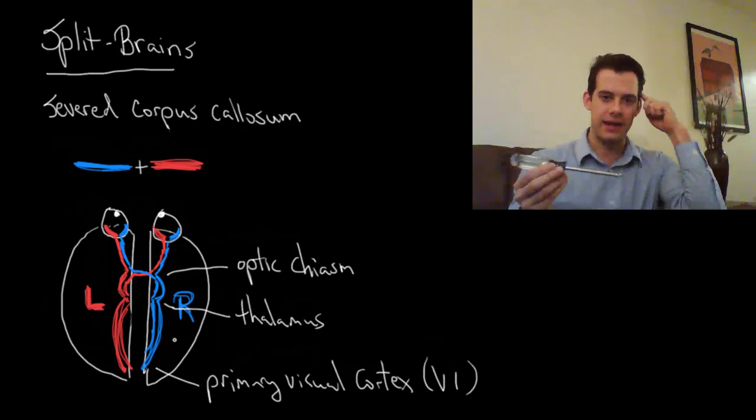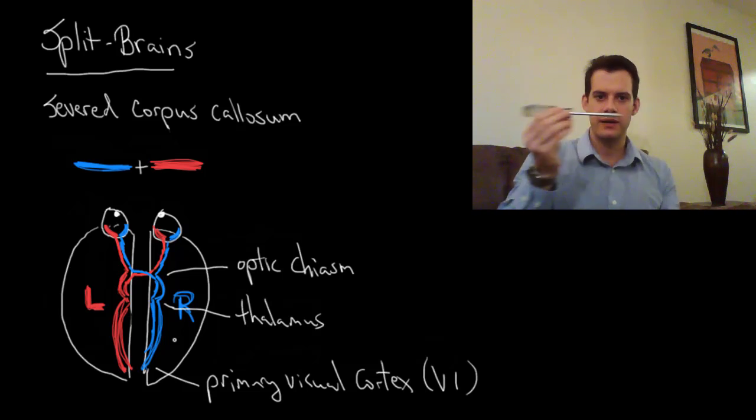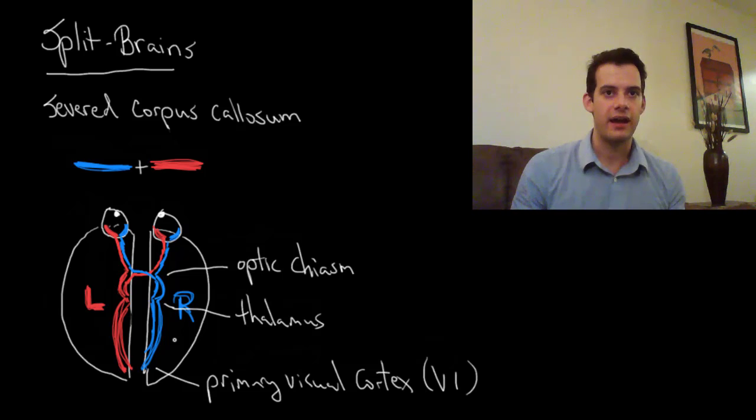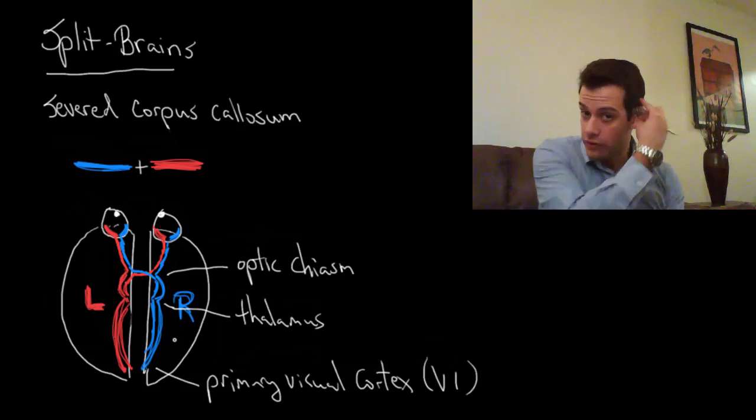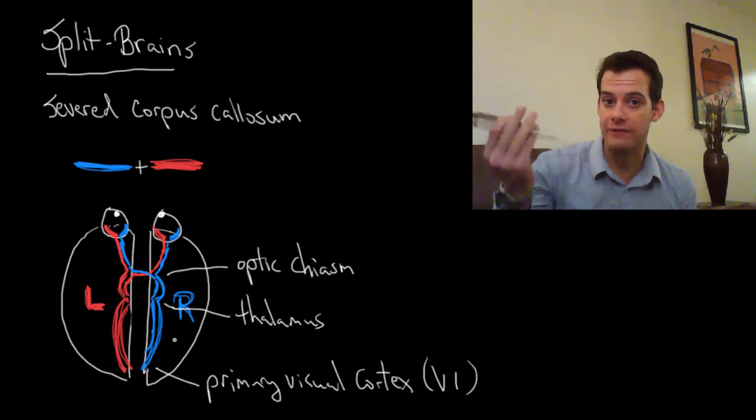So if I flash these on the screen, this screwdriver is going to my left hemisphere over here. So when you ask me what did you see on the screen, flash these there, and if I have a split brain I'm going to say I saw a screwdriver. Because that's all the left hemisphere saw. The right visual field.